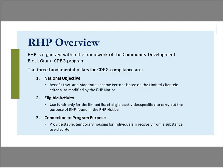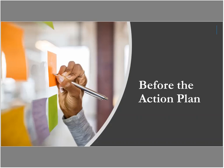At a high level, the program is organized within the framework of CDBG. As with CDBG, there are two key tests you have to meet, and the Recovery Housing Program adds a third. First is national objectives — with recovery housing, that is benefit to low- and moderate-income persons based on the limited clientele criteria, slightly modified by the notice. Second, you must have an eligible activity — only those listed in the notice are eligible for RHP funding. Third, there must be a connection to the program purpose: providing stable, temporary housing for individuals in recovery from a substance use disorder.